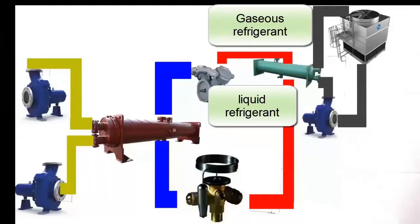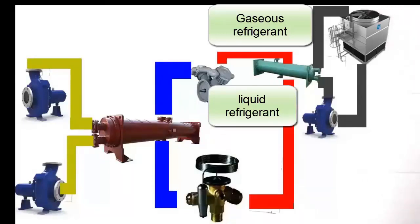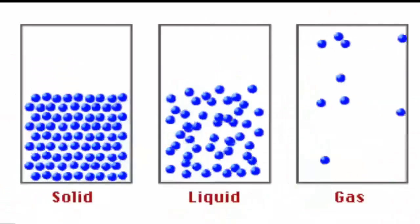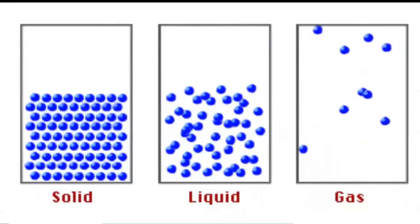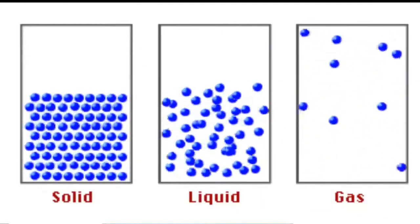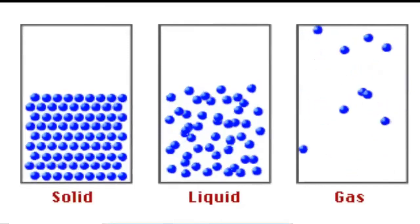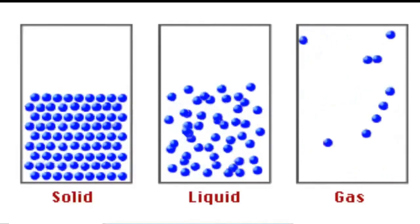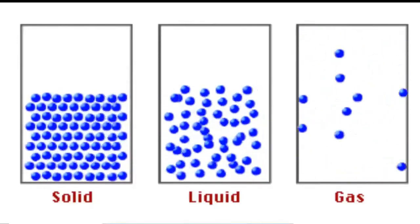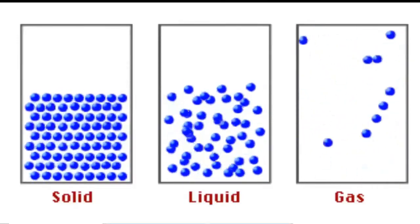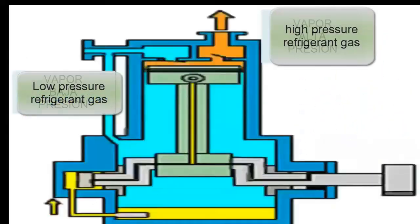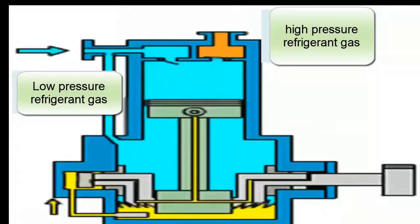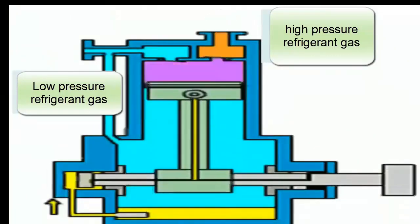The easiest way to condense a substance is by increasing its pressure. If we increase the pressure, the substance tends to condense because the molecules that form it are closer together. As substances separate, they are in a gaseous state; as they get closer, they go from a liquid state until they reach a solid state. We are interested in the fact that as pressure increases, molecules are closer together, making condensation easier.